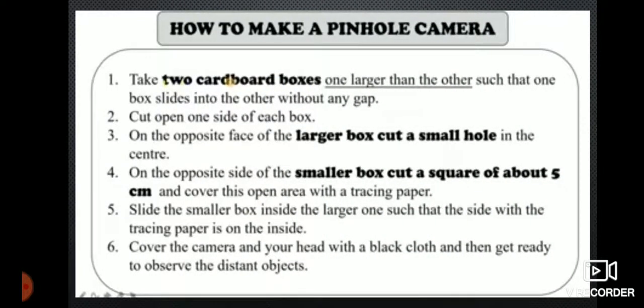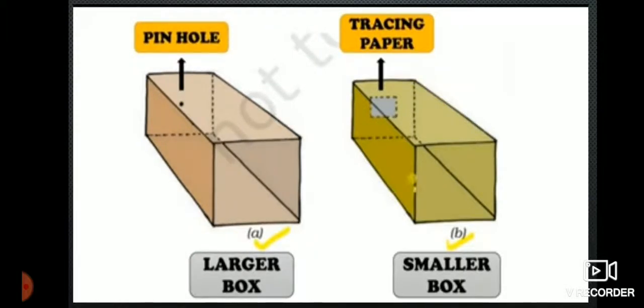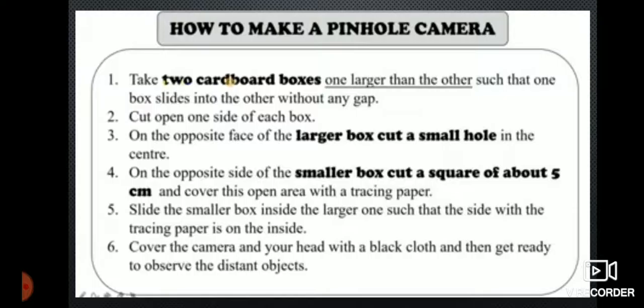On the opposite side of the smaller box, cut a square of about 5 cm and cover this open area with a tracing paper. In the larger box, cut and place a piece as shown. Cover the camera and your head with a black cloth and then get ready to observe the distant objects.